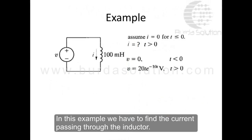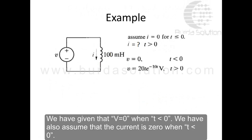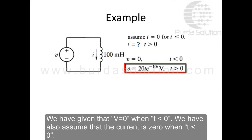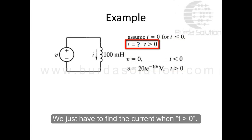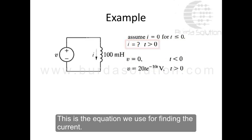In this example, we have to find the current passing through the inductor. We are given that V = 0 when t < 0, and for t > 0, the voltage is V = 20t · e^(−10t) V. We also assume that the current is 0 when t < 0, and we need to find the current when t > 0.